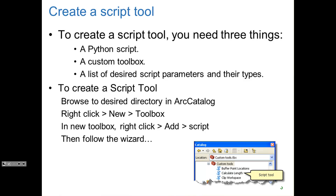Once you have your new toolbox, you can right-click and say Add Script. Then you just step through the wizard. If you go through and click OK, finish, and do all the defaults, you'll have a script tool. It won't do anything, but you'll have one.